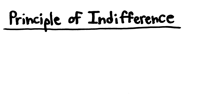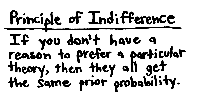One important guideline is the principle of indifference. If you have a bunch of similar theories and you have no a priori reason to prefer one of the theories more than any other, you shouldn't assign a higher prior probability to any one of the theories. There are some technical issues with this principle in certain contexts, but it's a good rule of thumb.